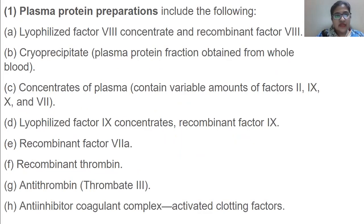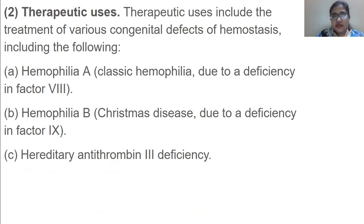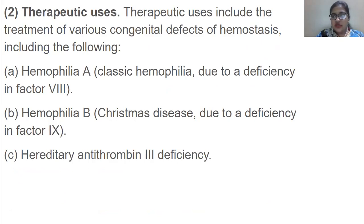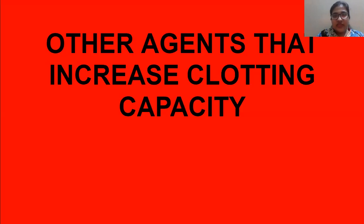Plasma protein preparations include several agents whose names you need to memorize. Their therapeutic use includes treatment of various congenital defects of hemostasis — inborn defects such as hemophilia A, which is due to deficiency of factor 8; hemophilia B, which is due to deficiency of factor 9; and hereditary antithrombin 3 deficiency.